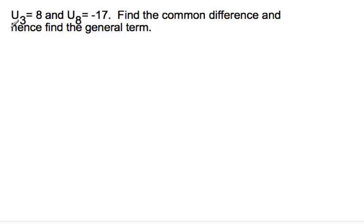Okay, so for this problem here, I have two components, and I want to find the common difference and the general term. Well, I know the general term says un is u1 plus d times n minus 1, and this is in your IB formula book.